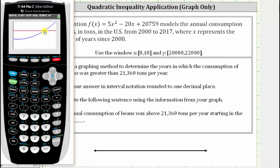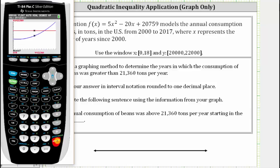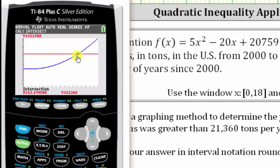The point of intersection will give us the x value where the consumption is exactly 21,360 tons per year. We find this point of intersection by pressing second trace for the calculation menu, option five for intersection, and then pressing enter three times. The point of intersection occurs when x is approximately 13.1, rounding to one decimal place. But that's when the consumption is exactly 21,360 tons per year — we want to know when it's greater than this amount.